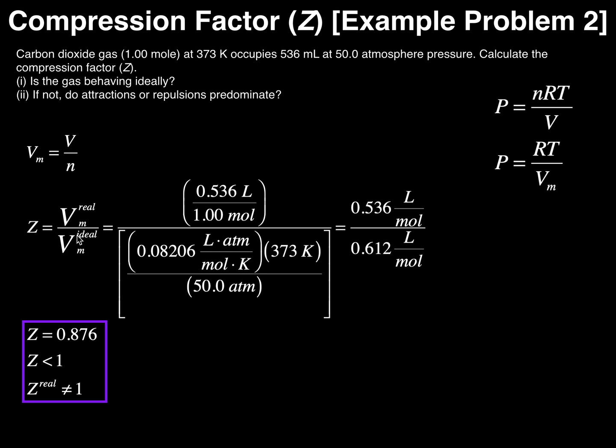Now in the denominator we have the ideal molar volume. This can be determined from the ideal gas formula. Remember, pressure is equal to nRT over V. If I divide both the numerator nRT and the volume in the denominator by N, then I get that the pressure is equal to RT over the molar volume, and I can solve for that.